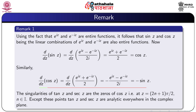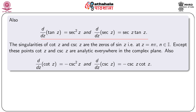Similarly, d/dz of cos z = -sin z. The singularities of tan z and sec z are the zeros of cos z, that is where cos z = 0, which occurs at z = (2n+1)π/2 where n is any integer. Except these points, tan z and sec z are analytic everywhere in the complex plane. The derivative of tan z is sec²z and the derivative of sec z is sec z tan z.